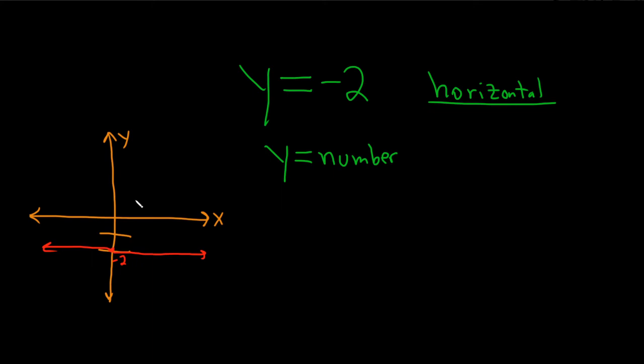So whenever it's y equal to a number, it's always a horizontal line. If you're wondering why, think about it like this. What's x? Well, it's not here, right? So if x is 0, y is negative 2. If x is 1, y is negative 2. If x is 20, y is negative 2. If x is negative 1, y is negative 2. No matter what x is, y is always equal to negative 2.